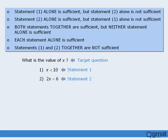Finally we have five answer choices. These answer choices are the same for each and every data sufficiency question, so be sure to become very familiar with them. On the day of your test, you will have five radio buttons, and you must select one of them for each question. Most GMAT resources will label these options from A to E in order to refer to each of them, and that's what we'll do here.